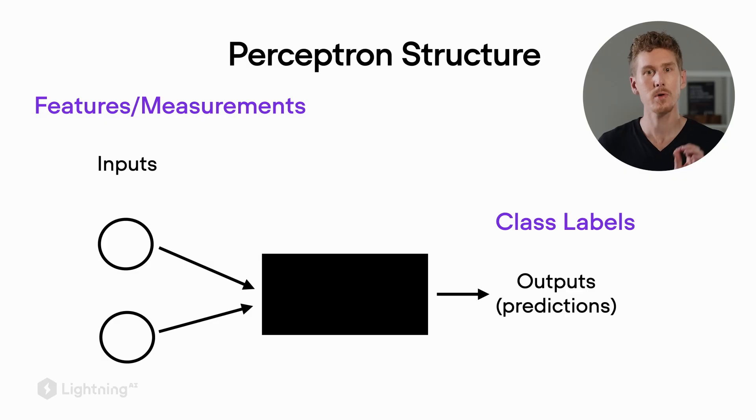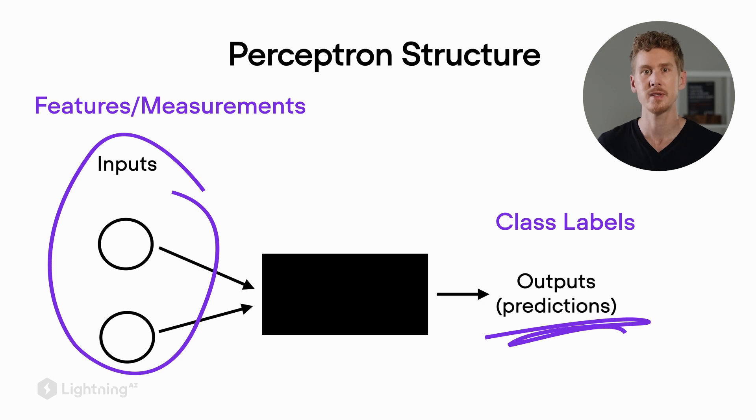Now enough about the inspiration behind perceptrons. Let's actually take a look at how they work. So the overall structure of a perceptron looks like that. We have inputs here, and the inputs go into a black box, which we will define later, and out come the predictions. So we have inputs, our features, our measurements, and the outputs represent our class labels.